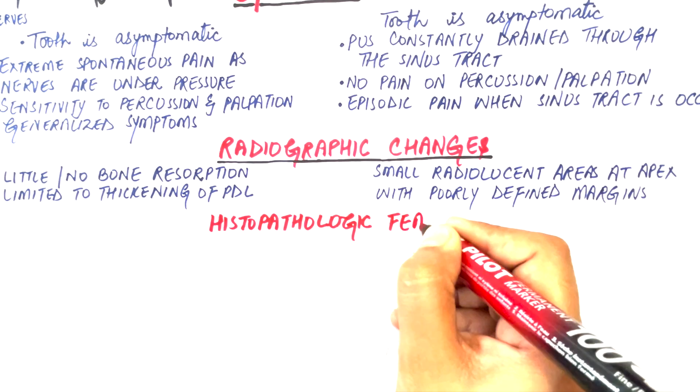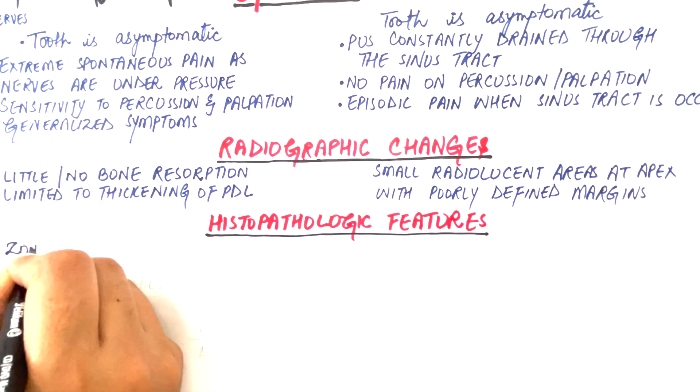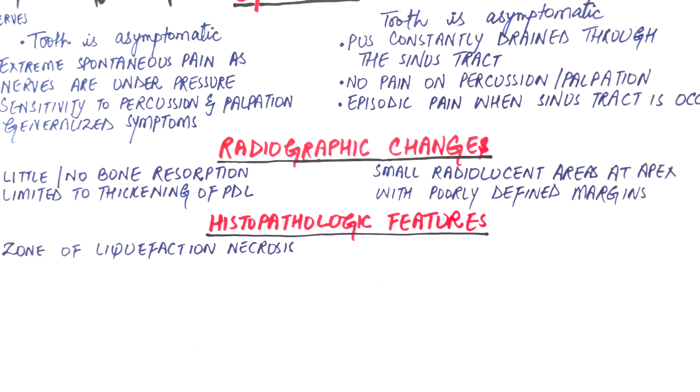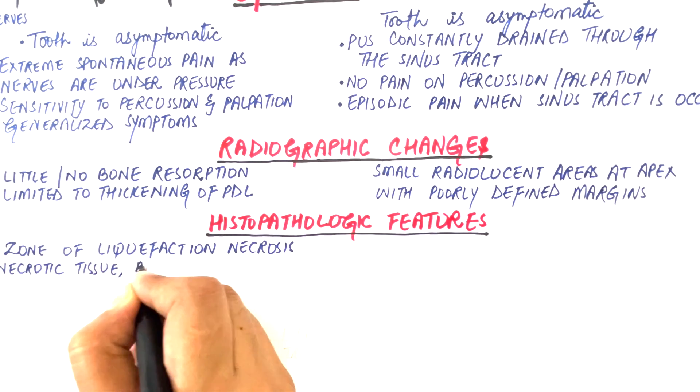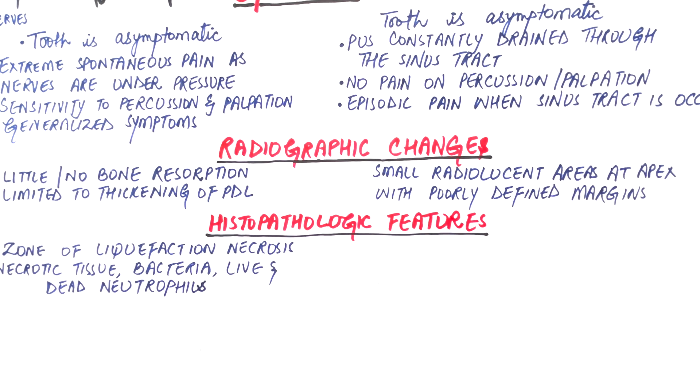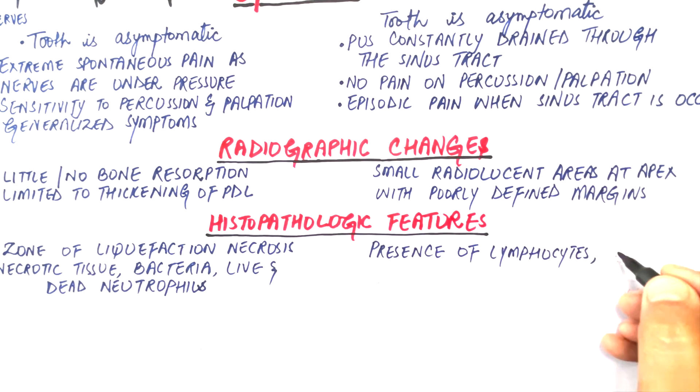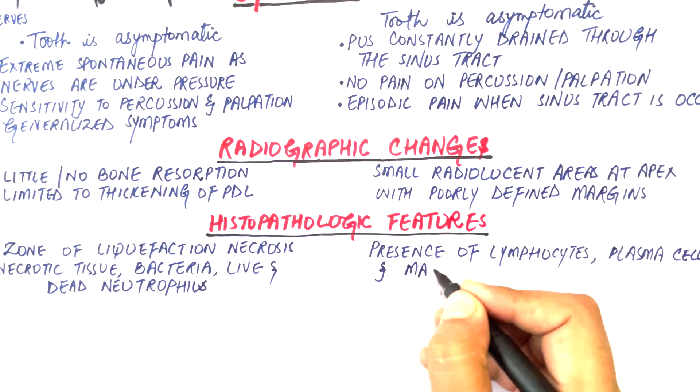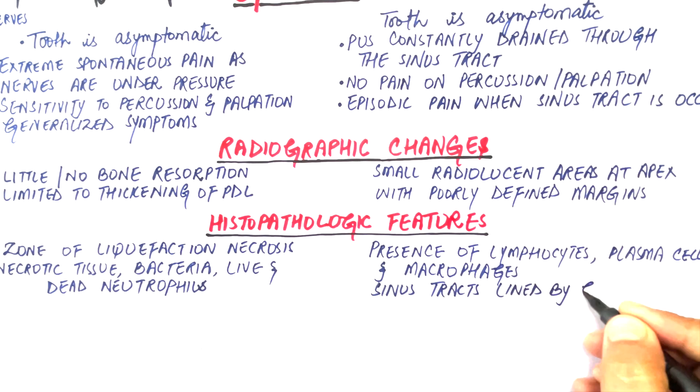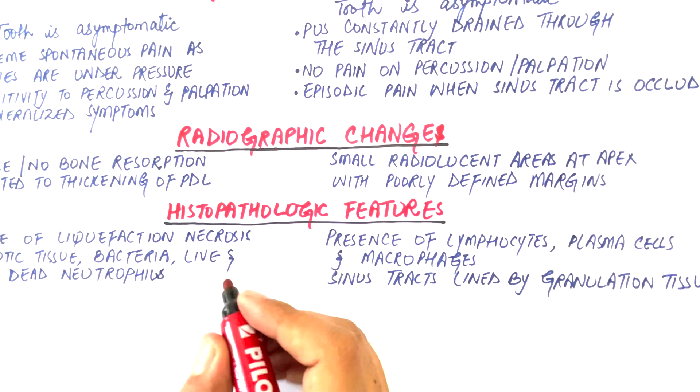In histopathologic samples, an acute abscess appears to be a zone of liquefaction necrosis, which is made up of necrotic tissues, bacteria, and a large number of live or dead neutrophils. In chronic abscess, chronic inflammatory cells like lymphocytes, plasma cells, and macrophages are seen. The pus discharging sinus tract in chronic abscess is lined either by granulation tissue or by asquemous epithelial lining.